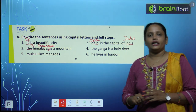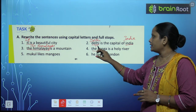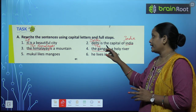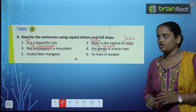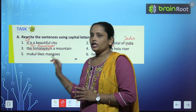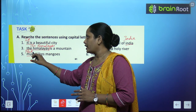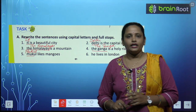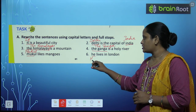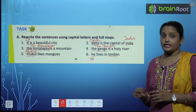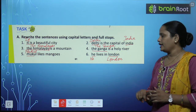"The Ganga is a holy river" — sentence start हो रहा है तो T capital, और Ganga एक special name है तो G capital, last में full stop. Fifth one: "Mukul likes mangoes" — Mukul एक special name है तो M capital, mangoes के बाद full stop. "He lives in London" — He से sentence start हो रहा है तो H capital, London एक place का special name है तो L capital, and then full stop. So like this you have to rewrite the sentences.